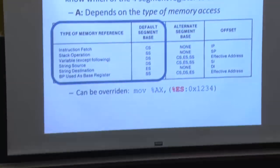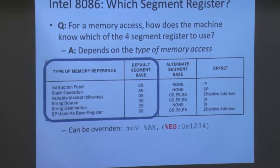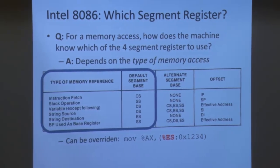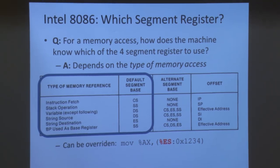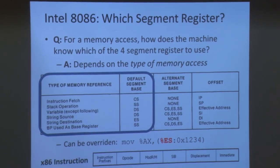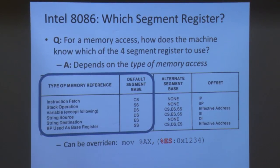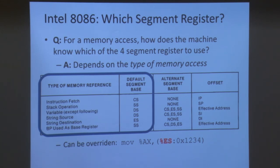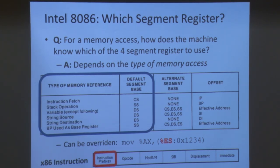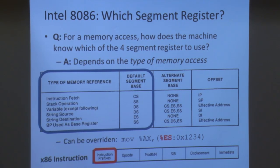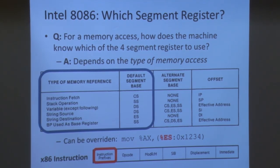x86 allows you to override this segment distinction by specifying it in your assembly code. For example, the move instruction implicitly accesses the data segment to fetch its address. But if you give it a prefix to the address, the move instruction fetches from the extra segment instead. This is called a segment override, which is encoded into the instruction as the first byte.